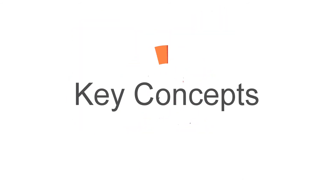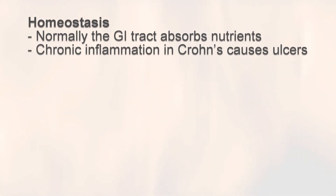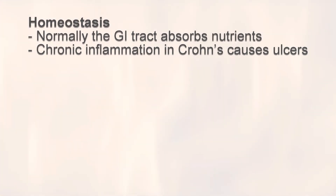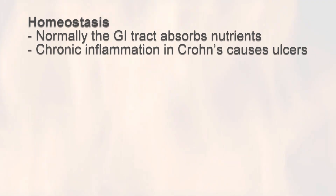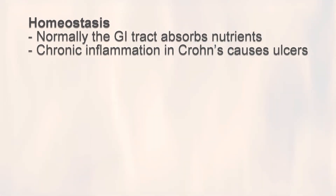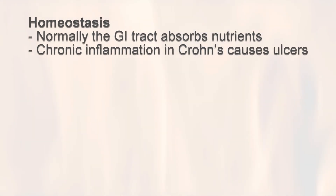Key Concepts Summary. Homeostasis. Normally, the GI tract digests food and absorbs the digested fragments through its lining into the blood. In Crohn's, chronic inflammation causes ulcers that break the lining of the intestine. This can lead to swelling, scarring, stiffness, and the narrowing of the intestinal walls.